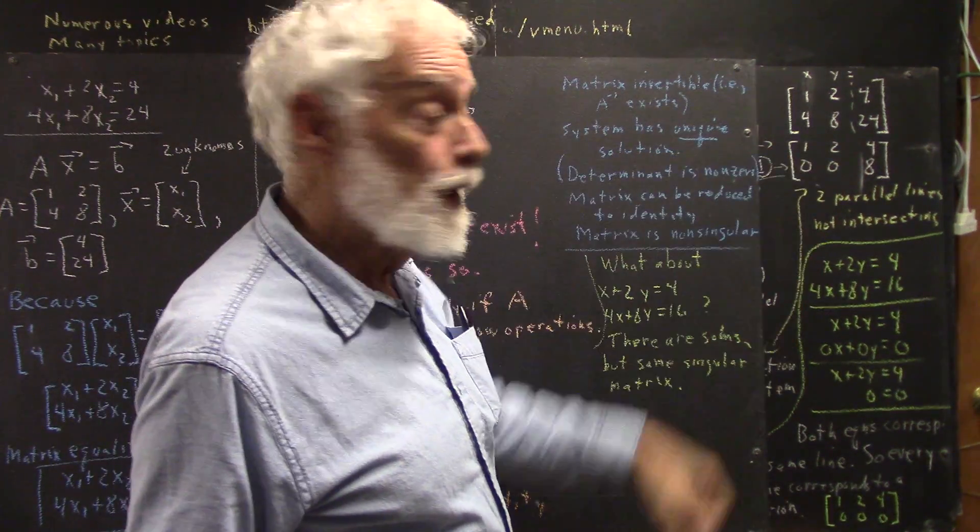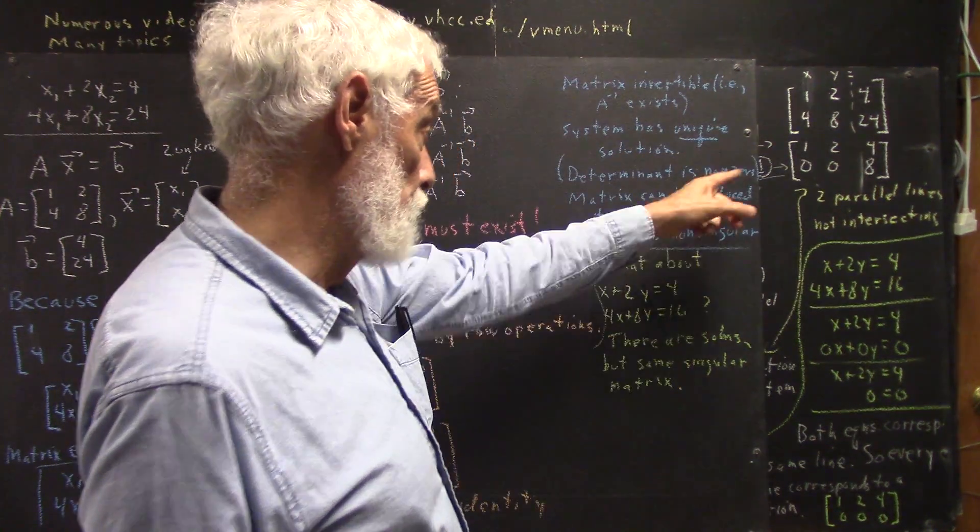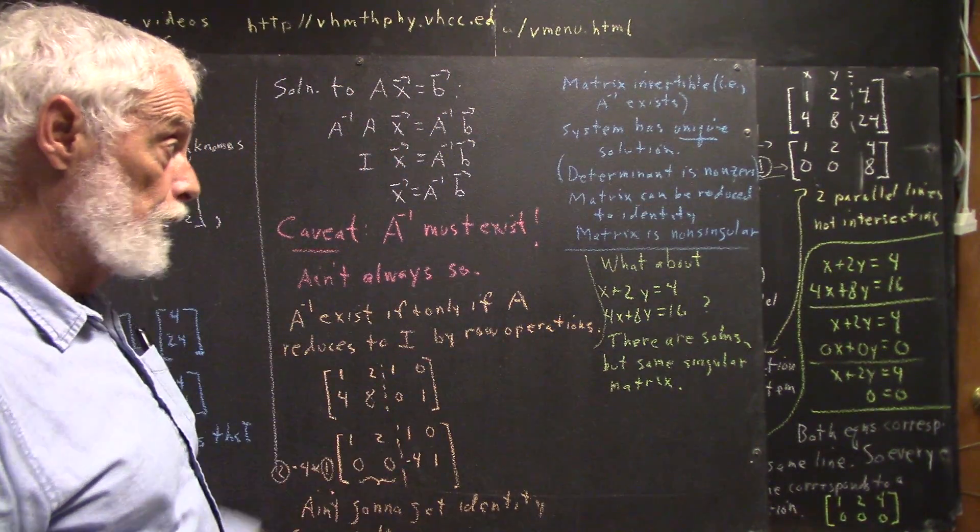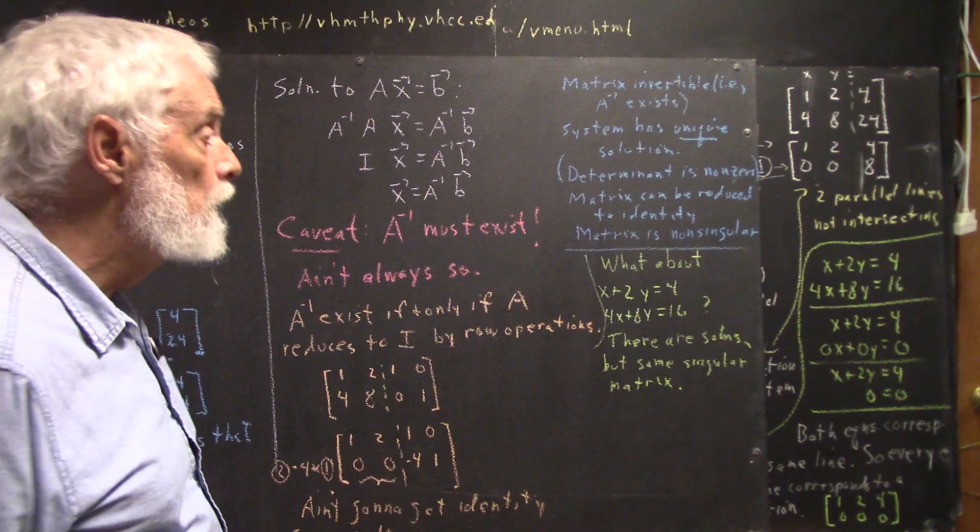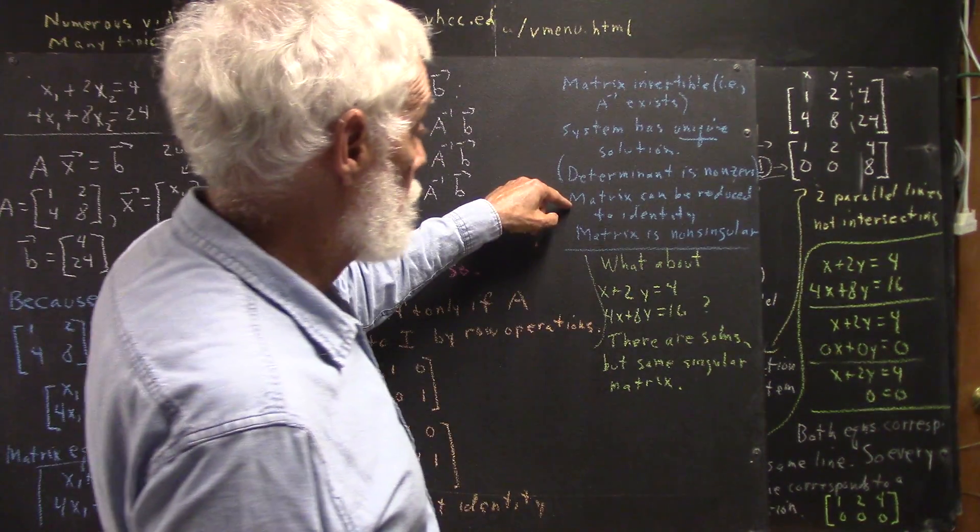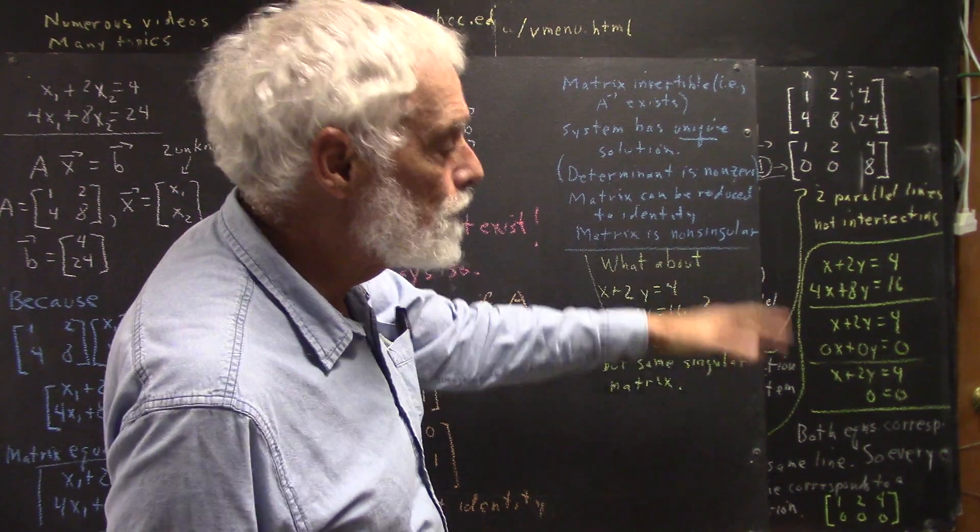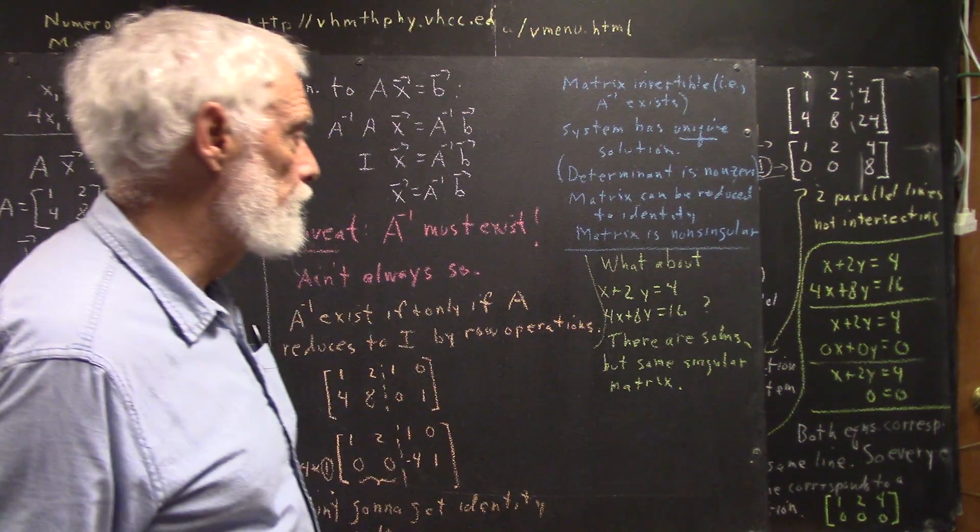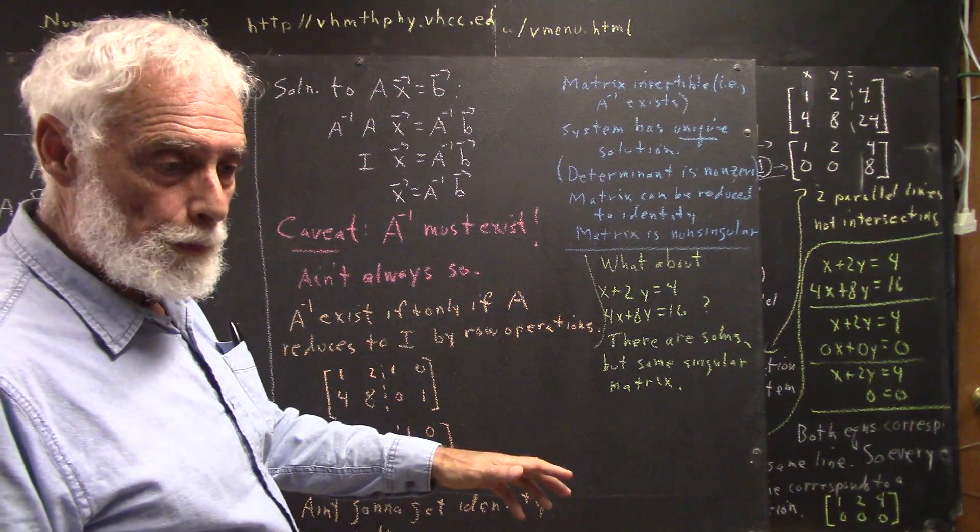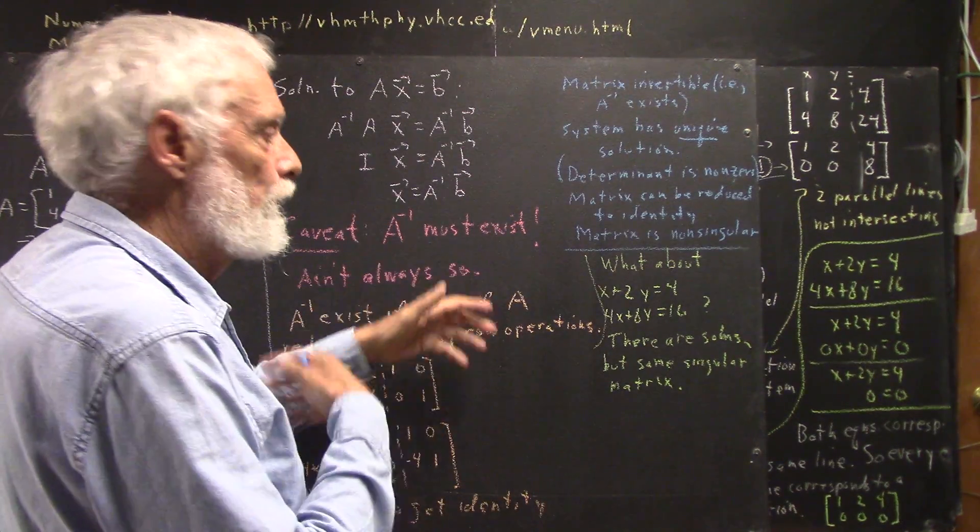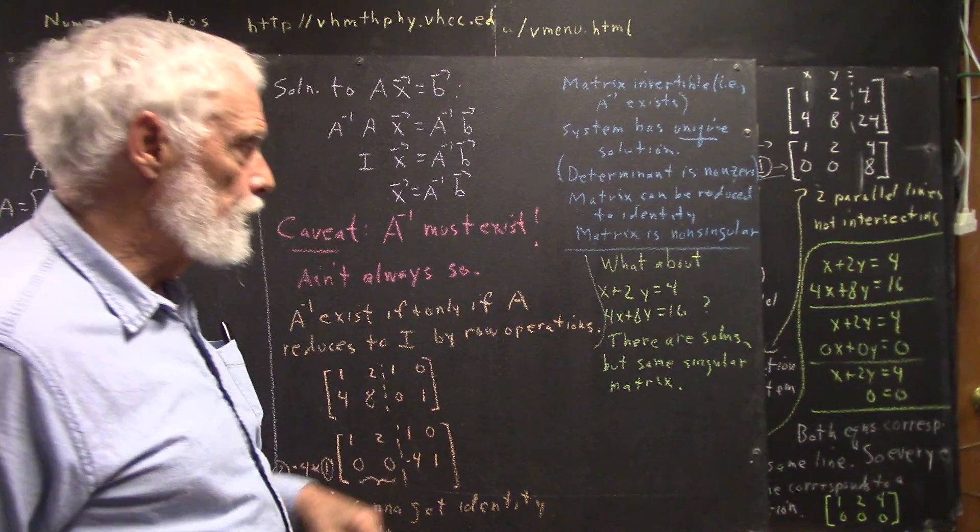Another is that the determinant is not zero. Non-zero is what I've used here. Put that in parentheses because you might not have seen determinants yet, but you probably have. Here, matrix can be reduced to the identity using the defined row operations. The same row operations you would use in eliminating variables with systems of equations.